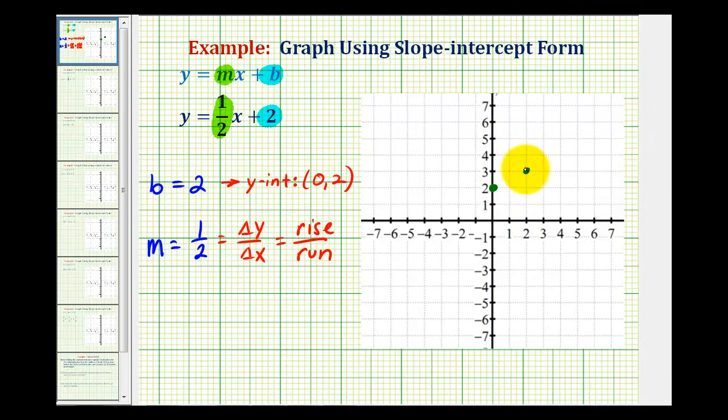If we want to, we can do this several times. We can go up one, right two again, and as many times as we wish, up one, right two. So the line y equals one half x plus two is the line passing through these points. We'll look at some more examples in the next video.